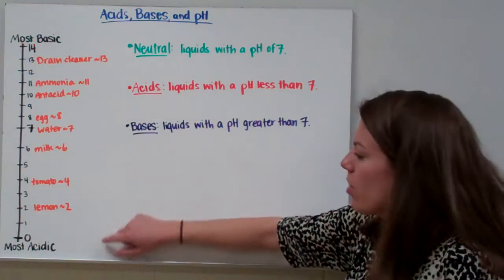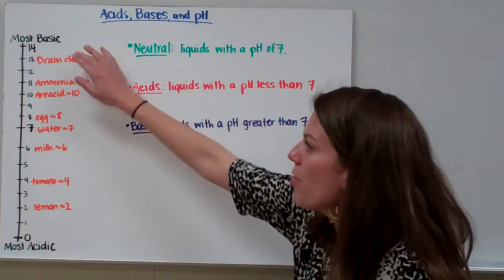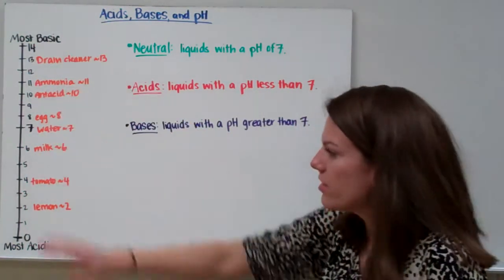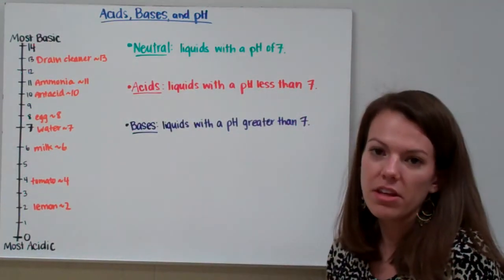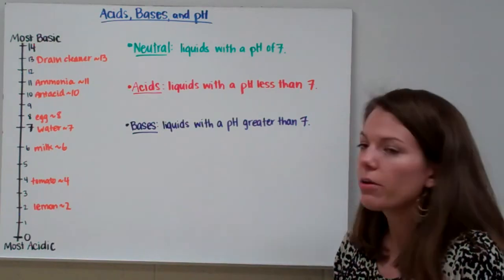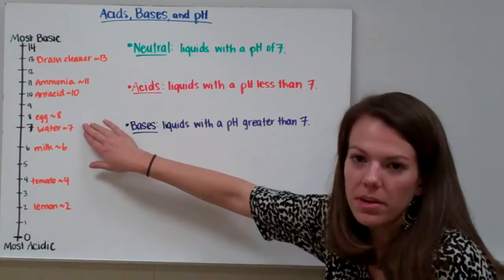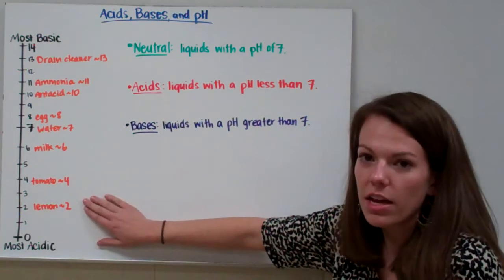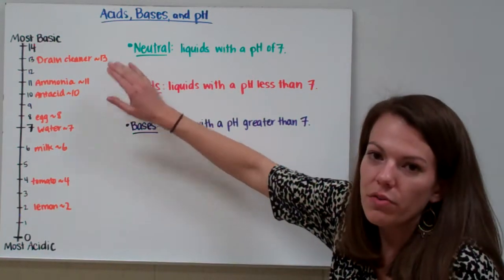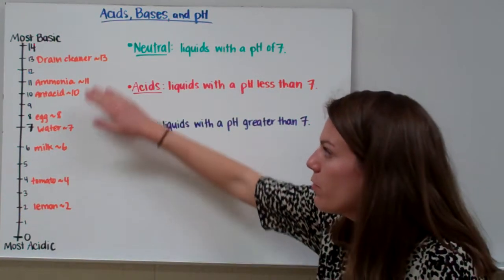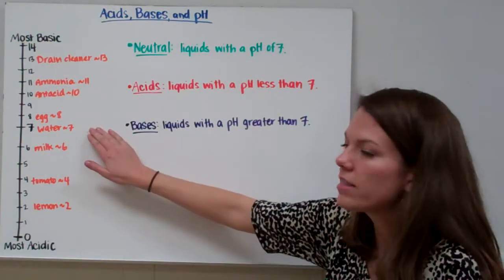The pH scale goes from 0 all the way up to 14. And as you can see there's a lot of different things that you might be familiar with that are on our pH scale. For example, water has a pH of 7, lemon juice has a pH of 2, and drain cleaner has a pH of 13. So we're going from 0 to 14 and in the middle is 7.